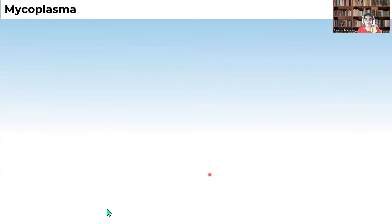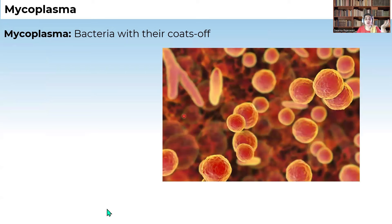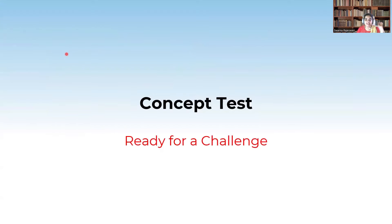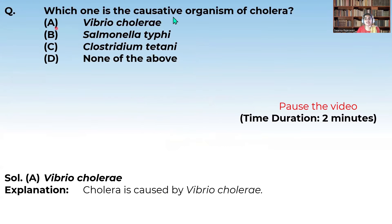Now let us discuss mycoplasma. Mycoplasma are the smallest known organisms and do not contain any cell wall — they are the smallest living cells and can survive without oxygen. They are bacteria without a cell wall. Concept test: Which of the following is the causative organism of cholera? Options: Vibrio cholerae, Salmonella typhi, Clostridium tetani, none of the above. We just saw the answer — it is Vibrio cholerae. Vibrio cholerae is comma-shaped.